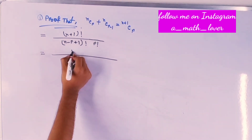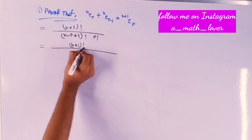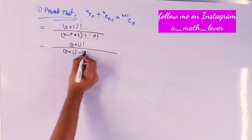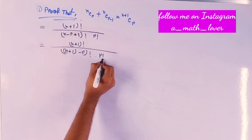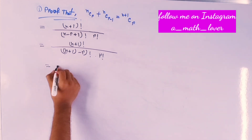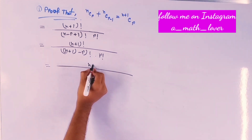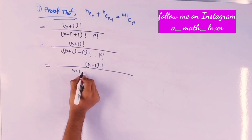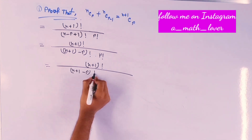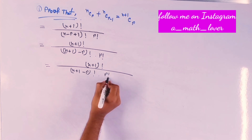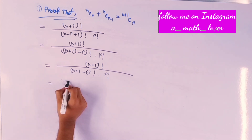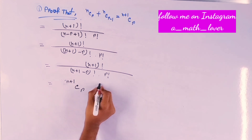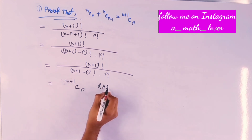Now this equals to (n plus 1) factorial by (n plus 1 minus r) factorial times r factorial, which equals to (n plus 1)Cr. This is RHS.